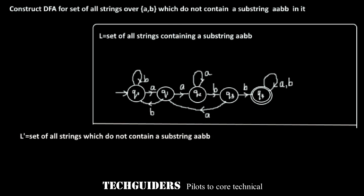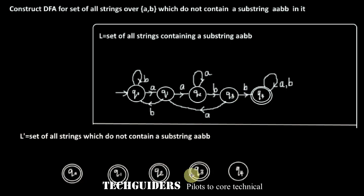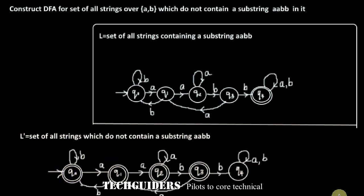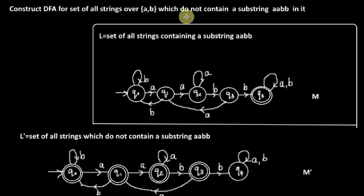To construct the DFA for the complementary language L', we complement this DFA by converting the final state to a non-final state and by converting all non-final states to final states. In order to reject strings containing the substring AABB, Q4 should be a non-final state. In order to accept every other string, all other states should be final states. All other transitions remain the same, and Q0 itself remains the initial state. This is our required DFA for the language: set of all strings which do not contain the substring AABB.